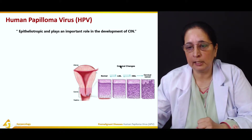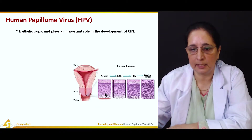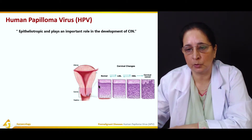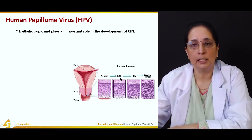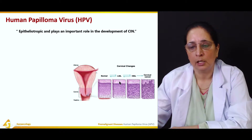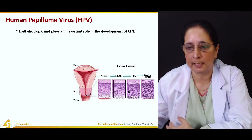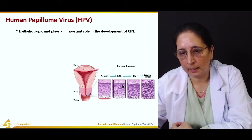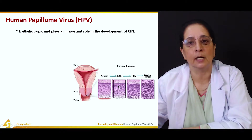Here are some cervical changes. This is the normal cervical epithelium with squamous-type cells and the transformation zone. This is the low-grade squamous intraepithelial lesion, where atypical cells are slowly developing. The base remains the same, but on the top layer, cellular atypia is starting.